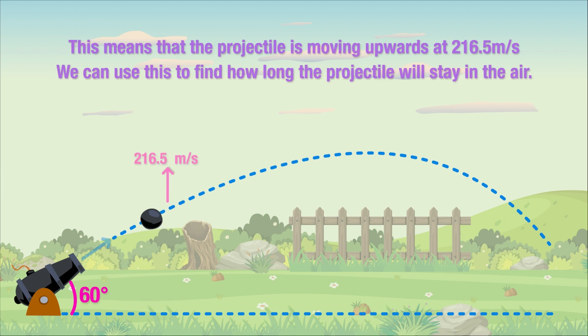But what does this mean? Well, this means that we can treat the projectile as if it were traveling upwards with an initial velocity of 216.5 meters per second. This will help us determine how long it will take to hit the ground again. Just as we did in our previous example, we'll assume that at the highest point, the projectile will momentarily be at rest before turning around and moving towards the ground again.